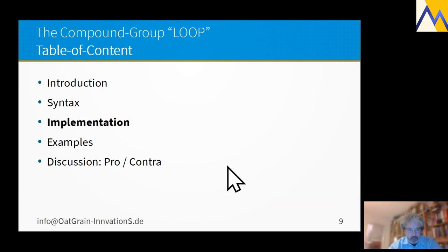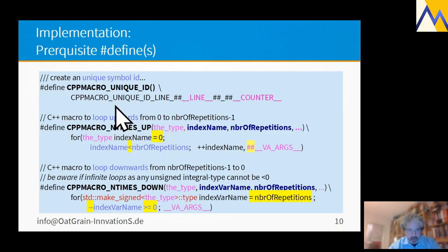The implementation was done like this. These are the prerequisites we need for defining them. This cpp macro UNIQUE_ID simply constructs from the line number and the counter a C symbol with this header that is used in this cpp macro NTIMES_UP example as a unique index name.